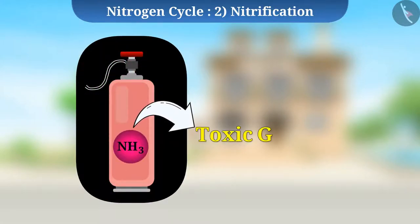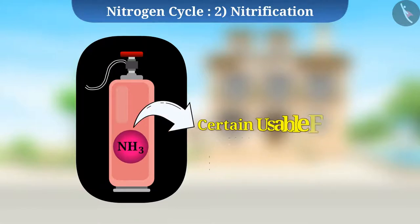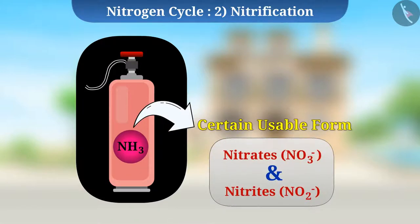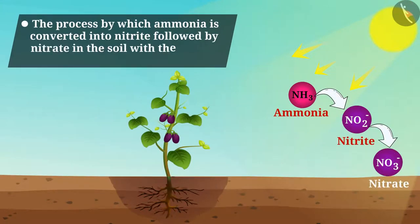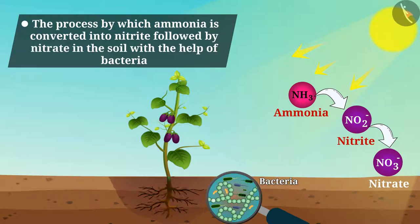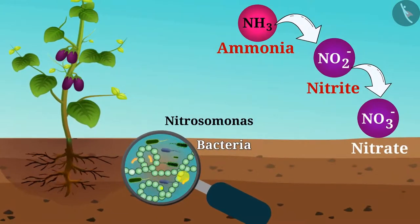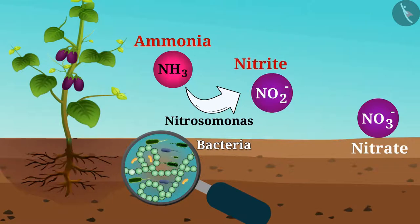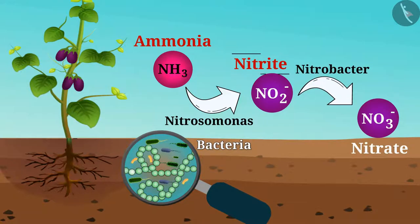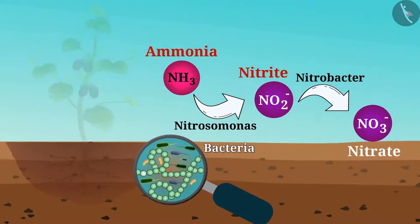The next stage is nitrification. Ammonia is a toxic gas and must be converted to a usable form. The process by which ammonia is converted into nitrite followed by nitrate in the soil with the help of bacteria is called nitrification. Bacteria such as Nitrobacter oxidize nitrites into nitrates, which is a form usable by plants.